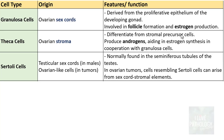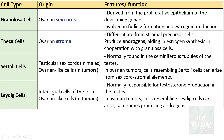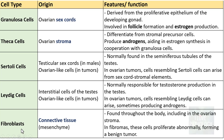The third important cell is the Sertoli cell. Sertoli cells are not normally seen in ovaries - they are mainly derived from testicular sex cords in males. But in some ovarian tumours, the cells resemble Sertoli cells. Leydig cells are derived from the interstitial cells of the testis and are not normally found in ovaries, but in certain ovarian tumours, cells resembling Leydig cells can be seen. Their main function is producing androgen; in males they produce testosterone. Finally, stromal cells are fibroblasts found throughout the body, including the ovarian stroma. Tumours derived from these fibroblasts are fibromas or fibrosarcomas.